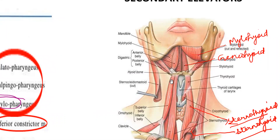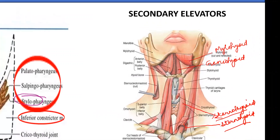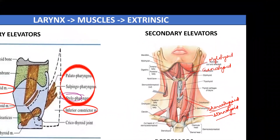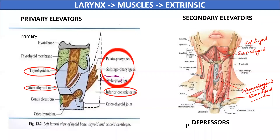Among the depressors of the larynx are muscles attached to the thyroid cartilage as well as muscles attached to the hyoid bone. These muscles are the sternothyroid and sternohyoid muscles. So the extrinsic muscles are either elevators or depressors of the larynx, and among the elevators there are primary and secondary elevators.